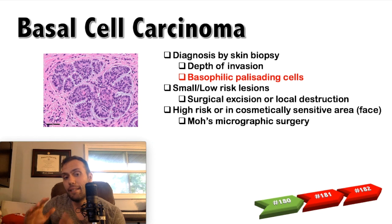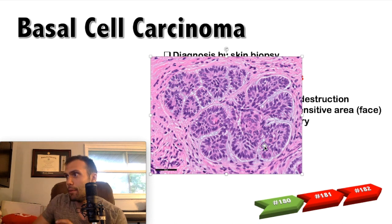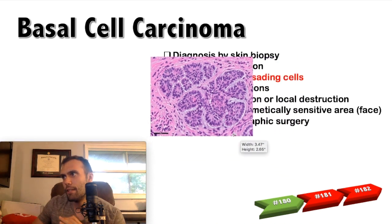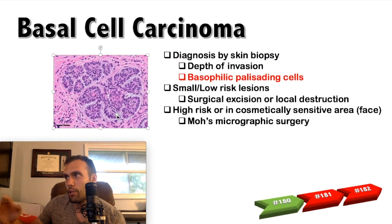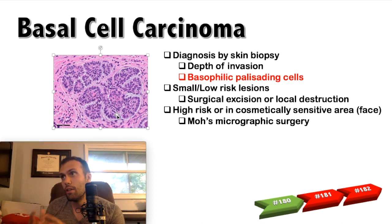For basal cell carcinoma on histology — and USMLE Step 1 loves histology — you'll see nests of basaloid cells in the dermis forming lobulated collections. They have very hyperchromatic, prominent nuclei. We normally expect basal cells to mature and lose their nuclei, not be in the dermis with hyperchromatic nuclei. The classic term that gives this away in a board question is 'palisading.' If they describe basophilic palisading cells on a skin lesion, it's basal cell carcinoma. If you see palisading, think basal cell carcinoma.